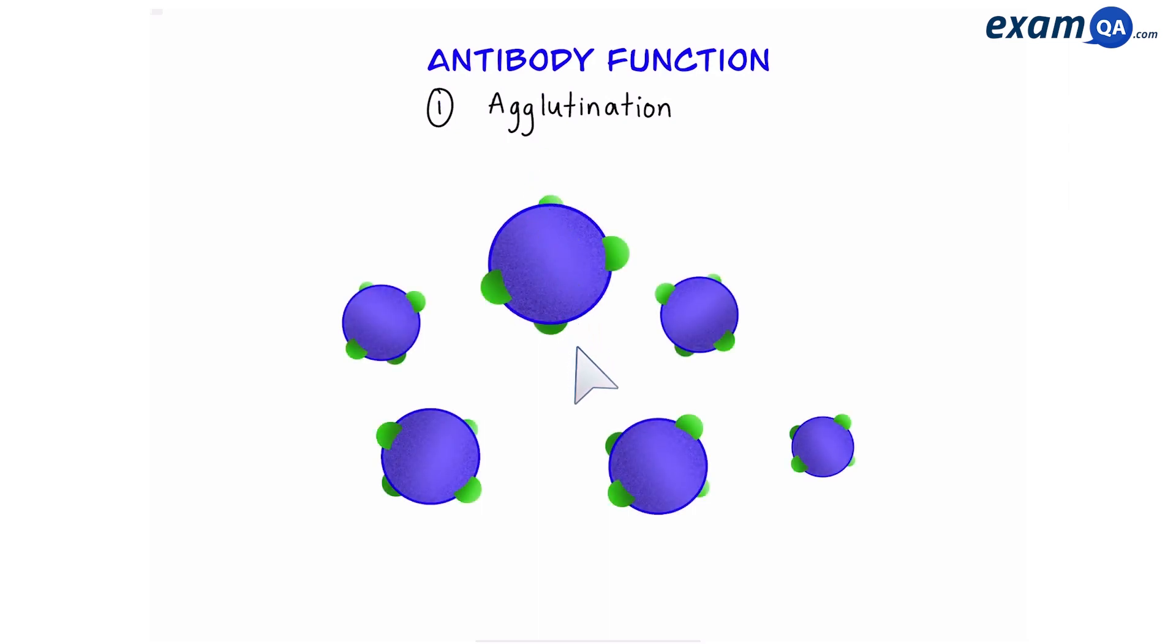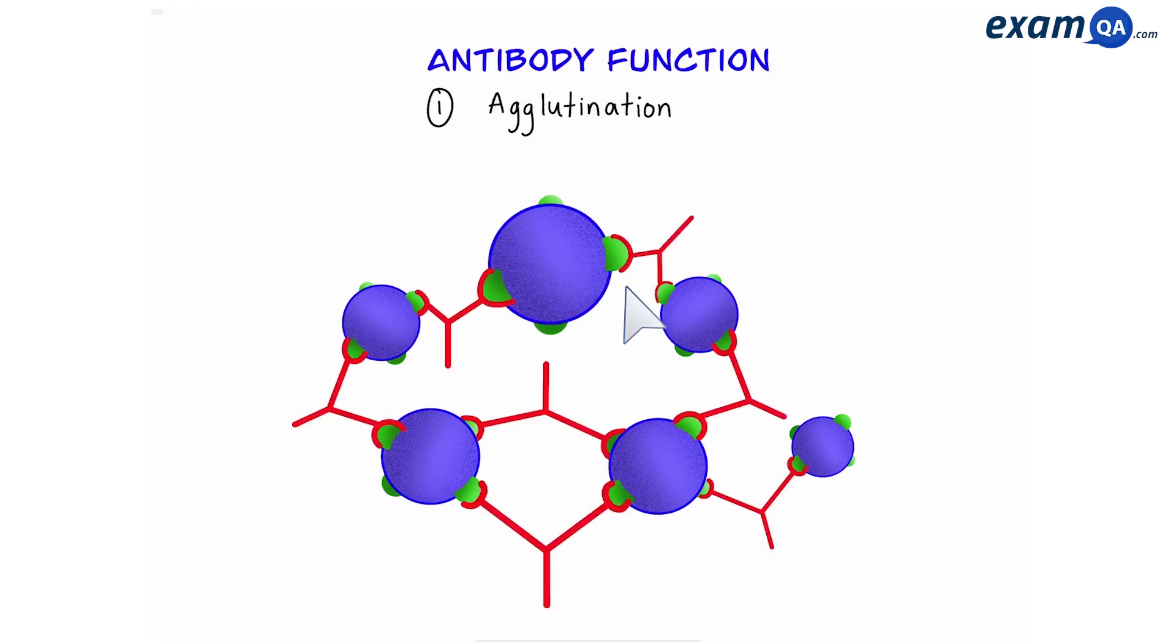Okay, so one of the first functions of an antibody is called agglutination. So let's say we have lots of pathogens moving around the body. All of them are moving independently, which could make it difficult for white blood cells to get them one by one. However, because of agglutination, the antibodies are going to join together like this. This helps to clump up all the pathogens in one space, making it easier for the white blood cell to eat them all up in one go.